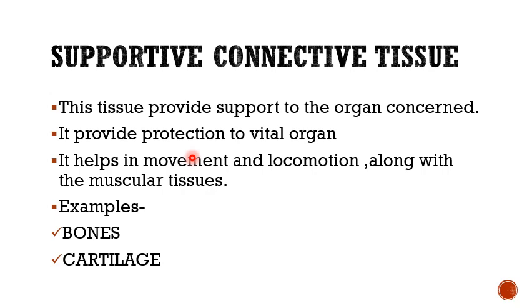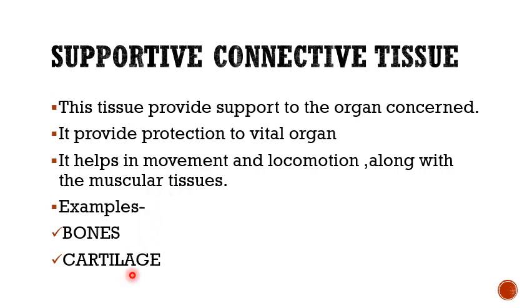After finishing proper connective tissue, the second part is supportive connective tissue. This tissue provides support to organs, protection to vital organs, and helps in movement and locomotion along with muscular tissue. In this category we include bone and cartilage.